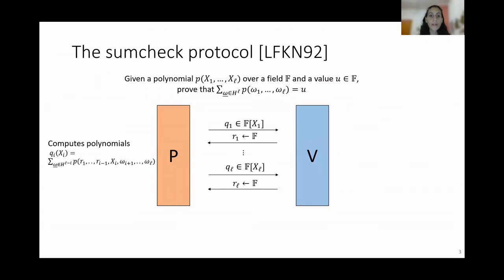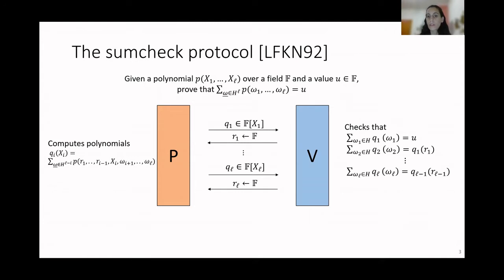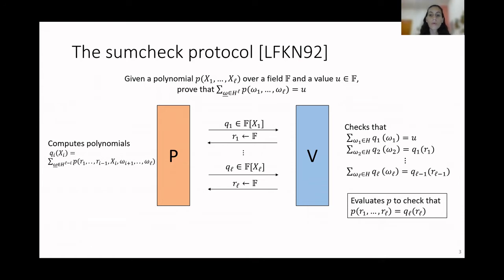Again, we have a prover and a verifier who exchange messages. In this case, the prover messages are some polynomials — smaller polynomials than the common polynomial P — and the verifier messages are some random challenges from the set F. After they exchange messages, the verifier performs some checks related to the messages sent by the prover, and the final check requires an evaluation of the polynomial P at a point defined by the verifier's challenge. Notice that this protocol reduces the computation of the polynomial P over H to the L points to the evaluation of P over a single point.